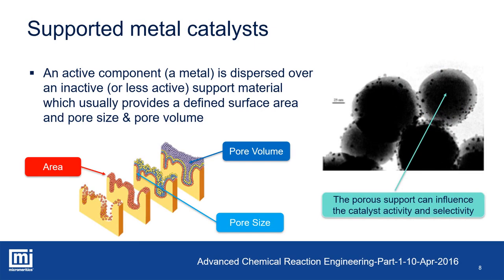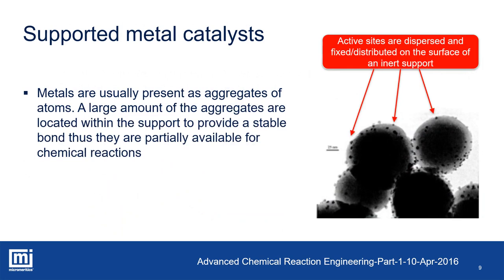Focusing on supported metal catalysts, they consist of an active component — a metal dispersed on a high surface area support made of an inert porous material. The porosity of the support is defined in terms of volumetric pore size distribution and specific surface area. The metal is dispersed on the support in the form of aggregates — large metal particles fixed to the support. Only a small percentage of the metal remains exposed to chemical reagents, while the larger part of the aggregate is firmly incorporated within the support. In supported metal catalysts, it is essential to define the ratio between metal atoms exposed to reagents and those that are not — this is the metal dispersion percentage.